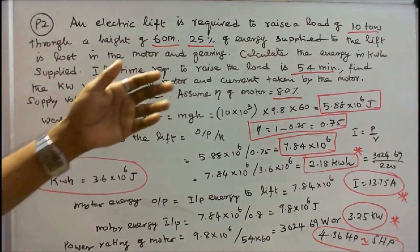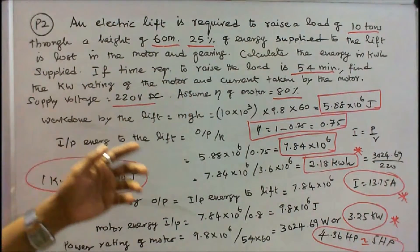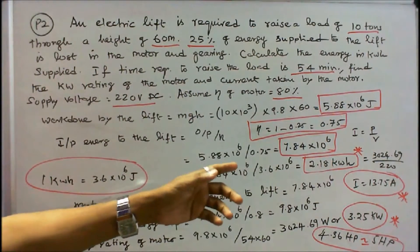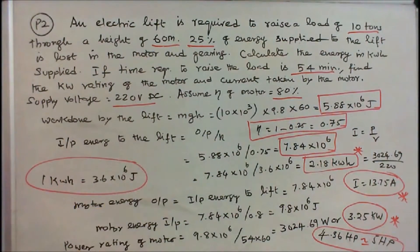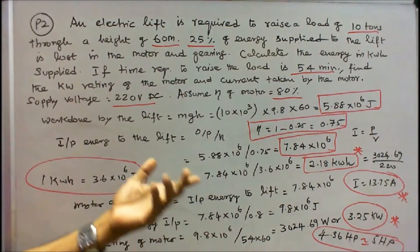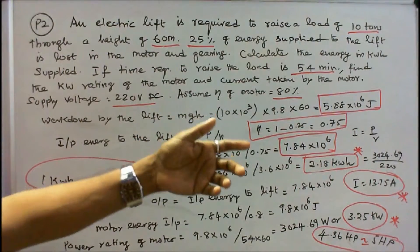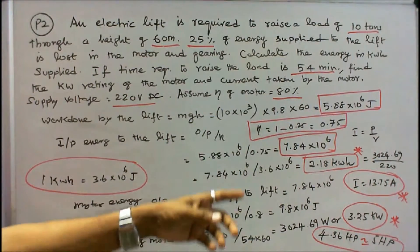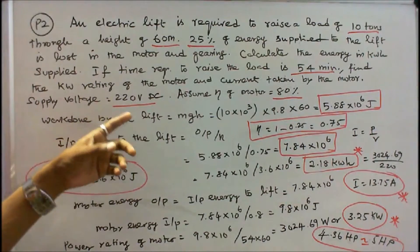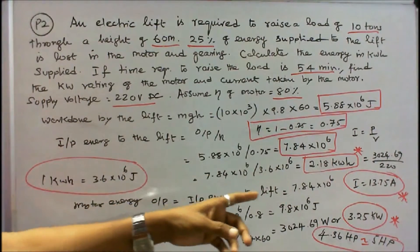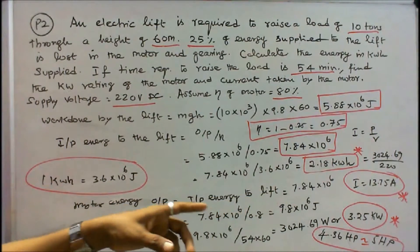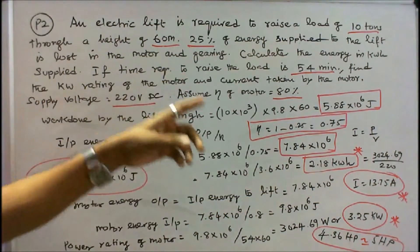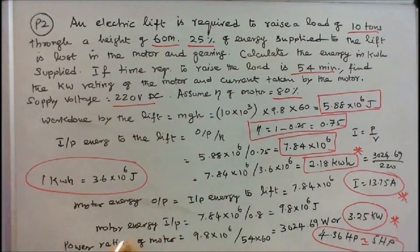The energy supplied is 2.18 kWh. Next, we find the current. I is equal to P by V, that is 3024.69 divided by 220. I is equal to 13.75 amps. So the current taken by the motor is 13.75 amps.